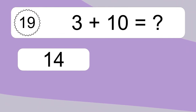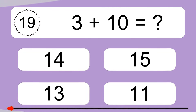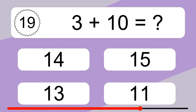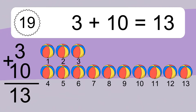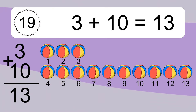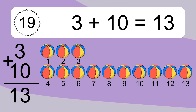Three plus ten equals what? Three plus ten equals thirteen. Let's count it: one, two, three, four, five, six, seven, eight, nine, ten, eleven, twelve, thirteen.